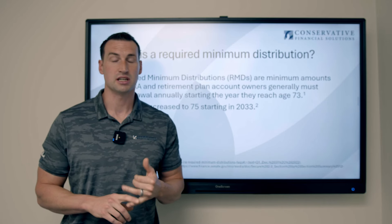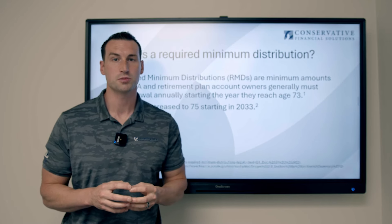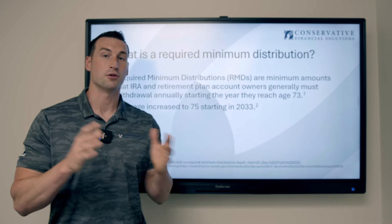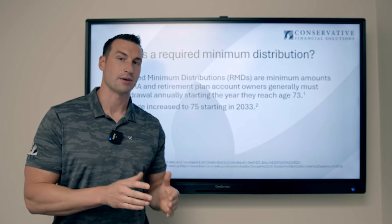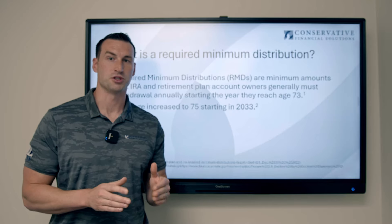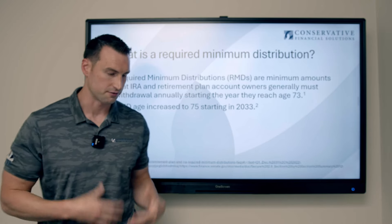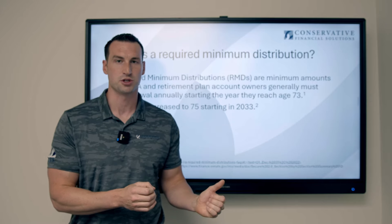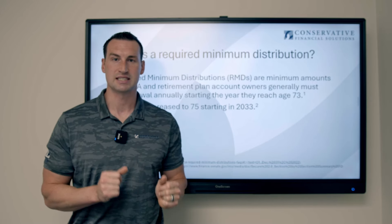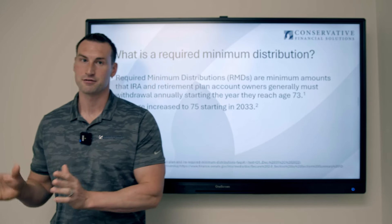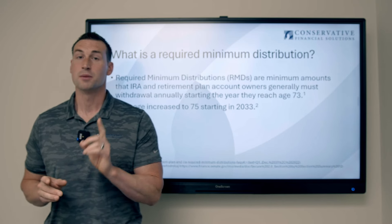Another exception: in the first year you have to take your required minimum distribution, you have until April 1st of the next year to take it, instead of the usual December 31st deadline. So maybe you forgot, or maybe tax planning suggests it's better to take it the following year — you actually have until April 1st to do so.